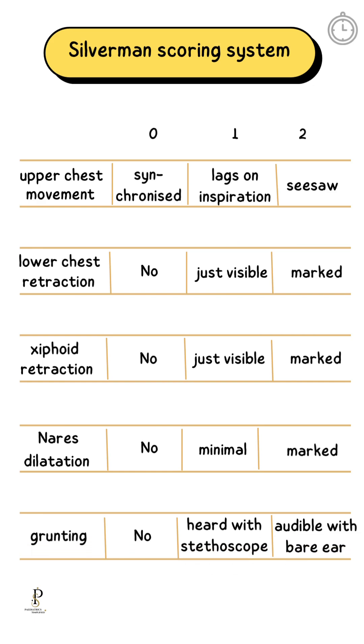Grunting: no grunting is grade 0; grunting heard with stethoscope is grade 1; grunting audible with the bare ear is grade 2.